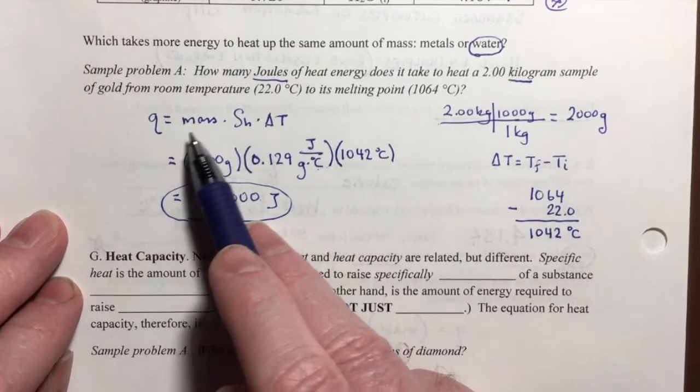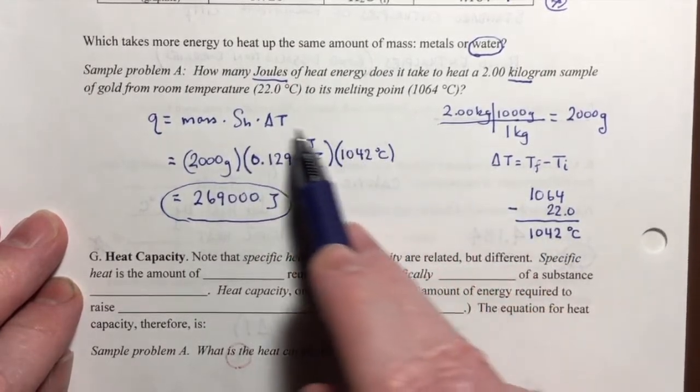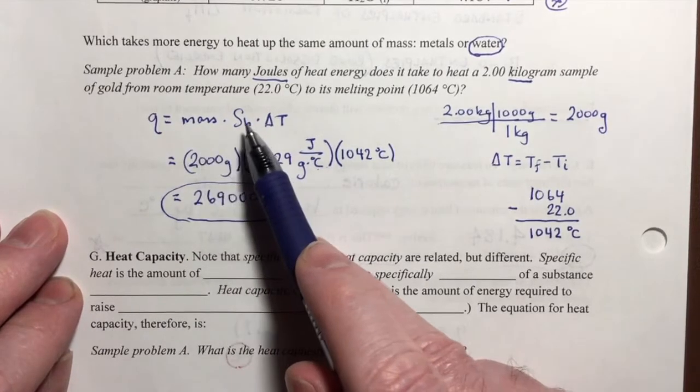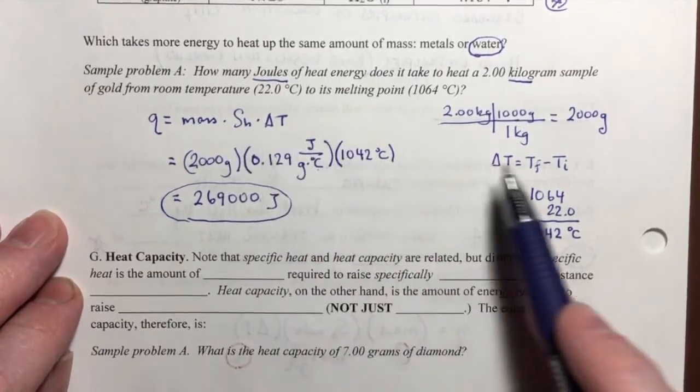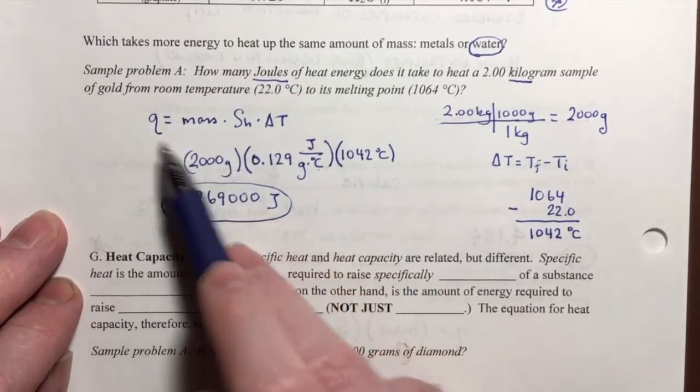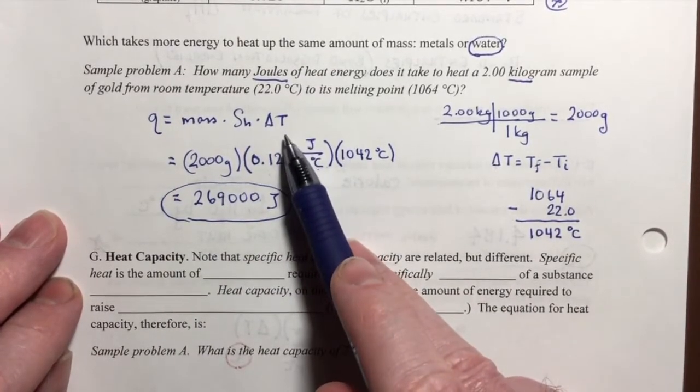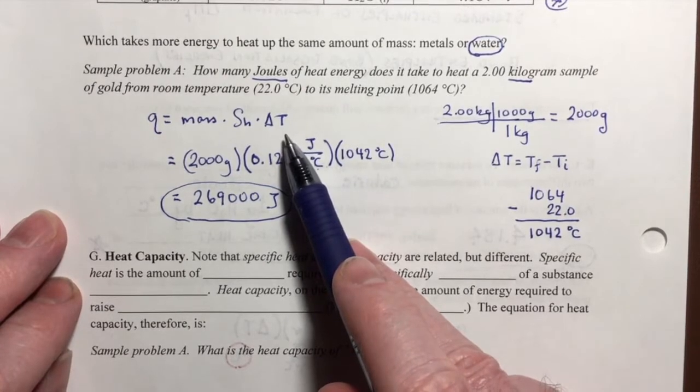So there are a lot of ways that a problem like this can be structured, because you fundamentally have one, two, three, and that delta T represents four, five - you have five variables that are implied in this equation. And you could be asked to solve any one of them.